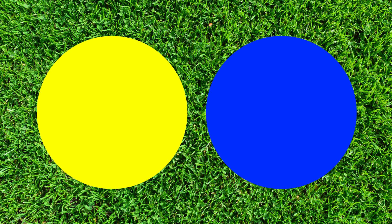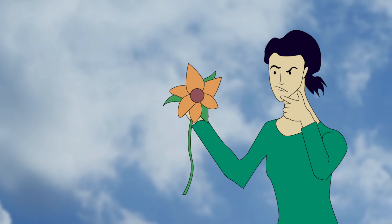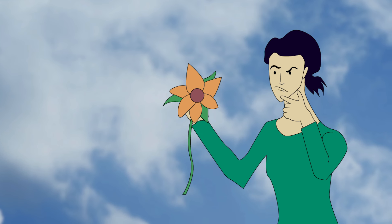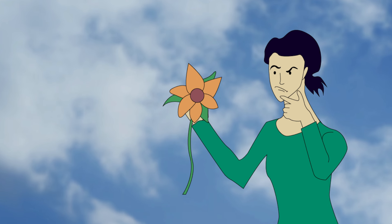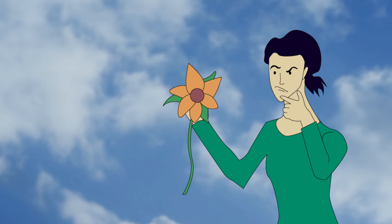Plants can be put in one of two groups: monocots, short for monocotyledons, and dicots, short for dicotyledons. But what's the difference between these groups, and how can you tell which is which?